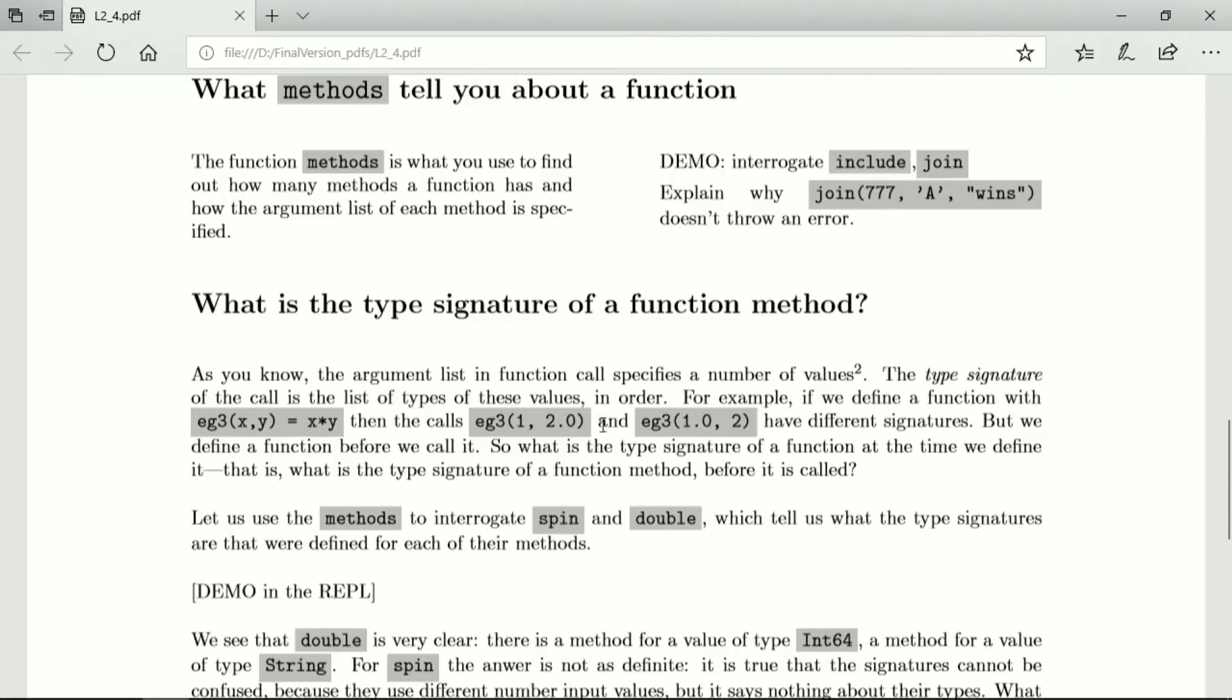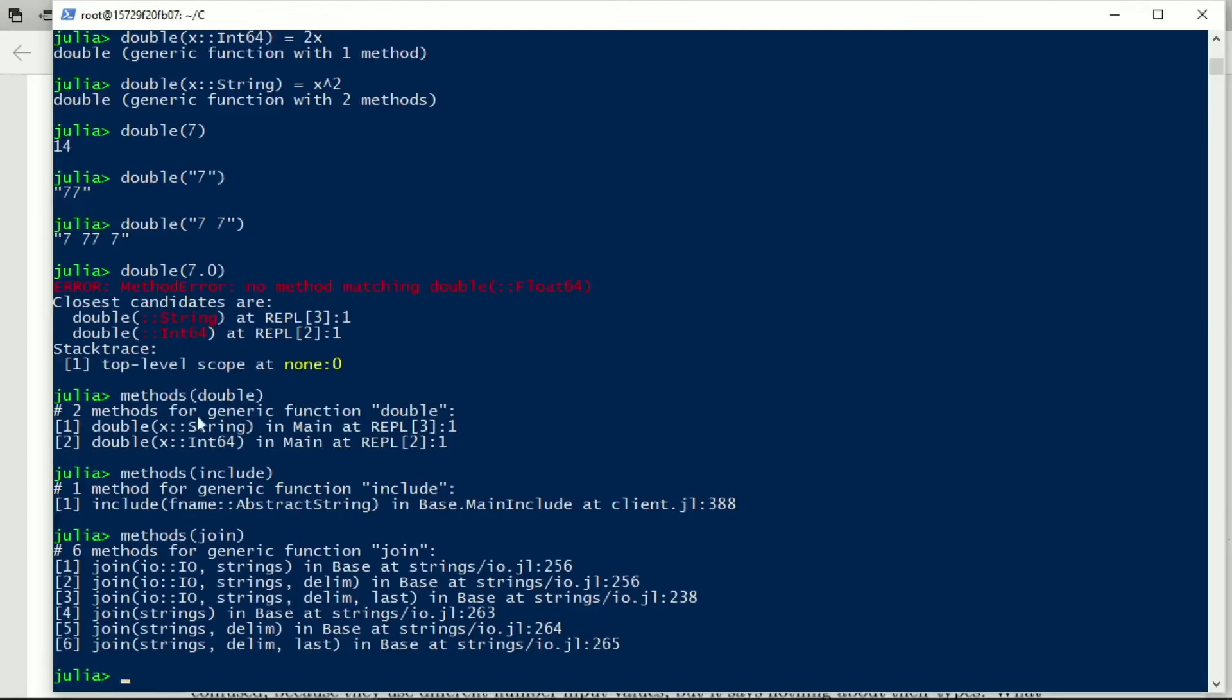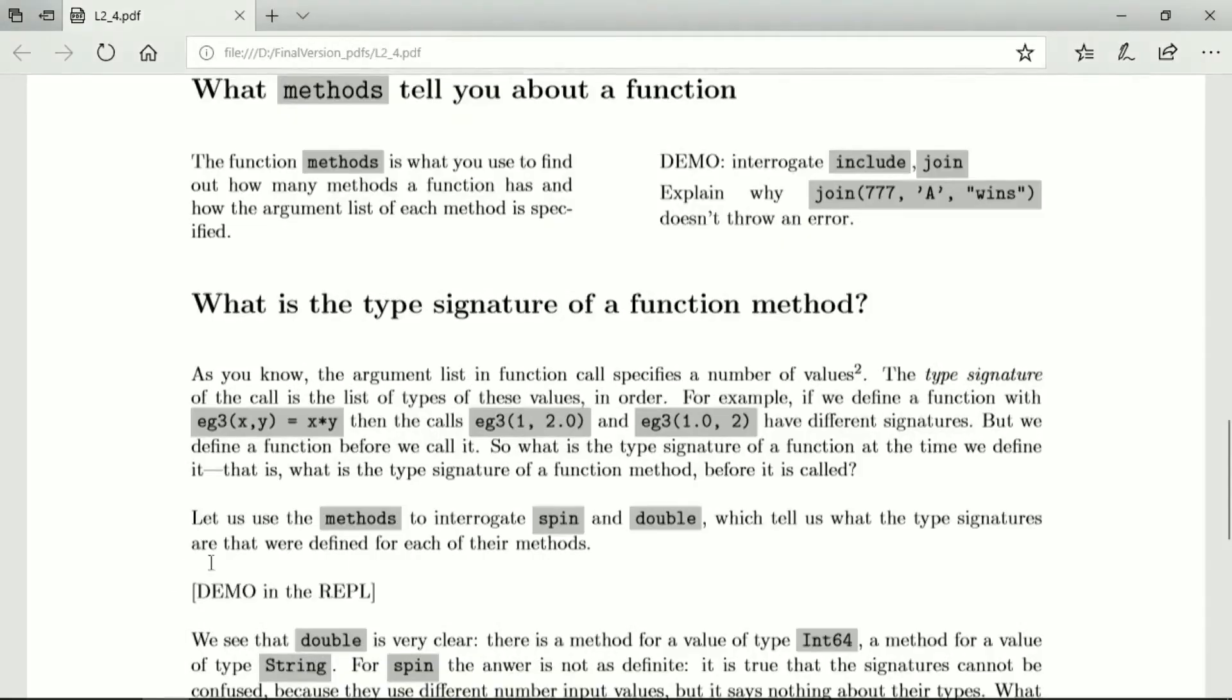But this is easy to do when you have a function call, because all of these values are actually completely definite. So when we actually define a function before we ever call it, what do we mean by the function signature of a function at the time we define it? And that gets back to this. Here is the function signature, and it says we specify that x must be of type string, and then there's that method. Or we specify that x must be of type int64, and then it's the other method. And similarly, there are six different methods, six different pieces of code in Julia for the function join.